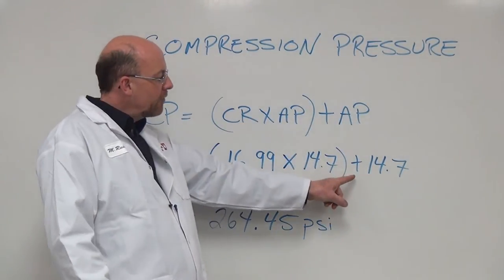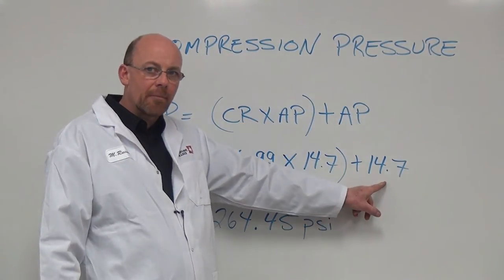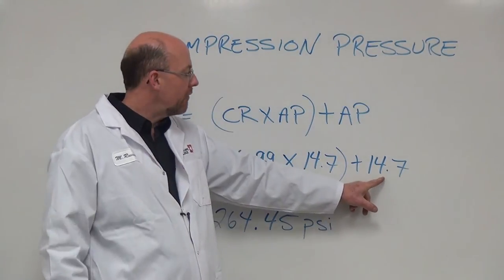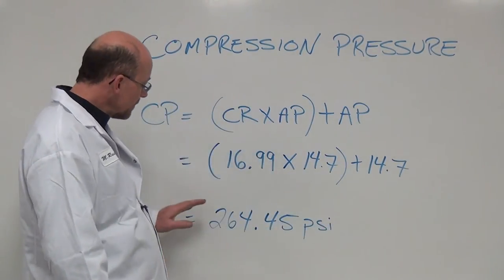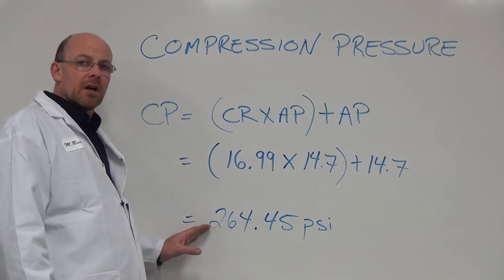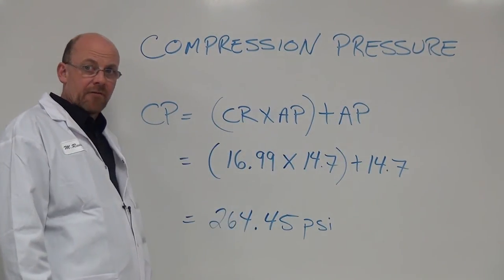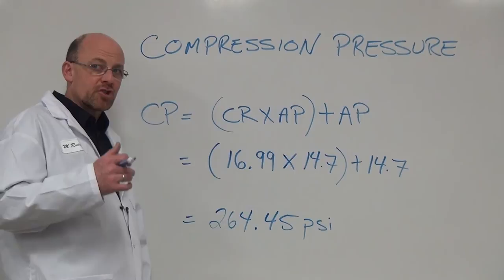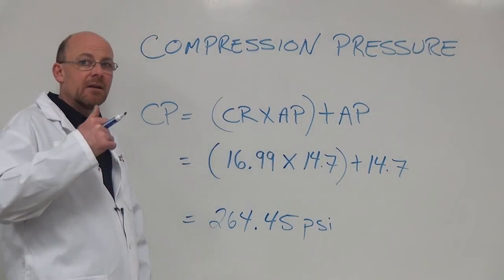Giving us a value, and then of course we add it to the nominal value that's always there of 14.7. That calculates out to 264.45 psi for the compression pressure that the engine can create.